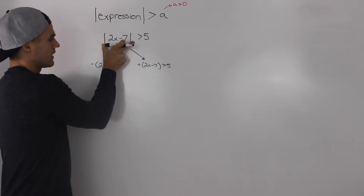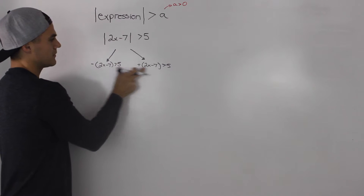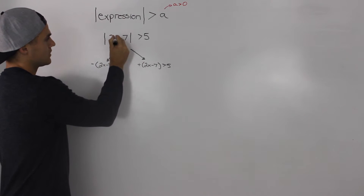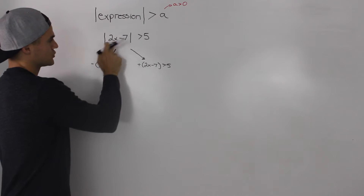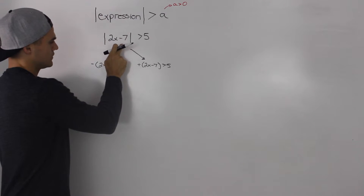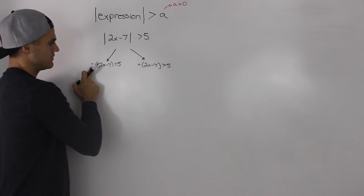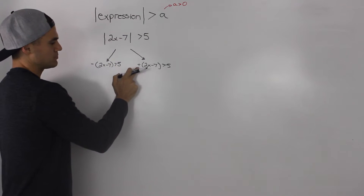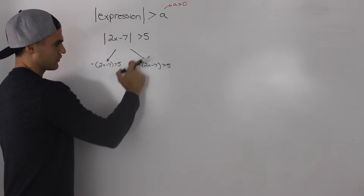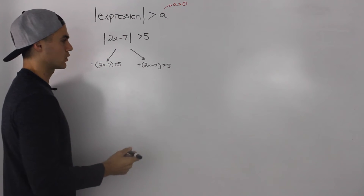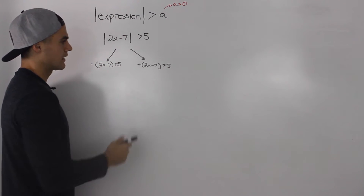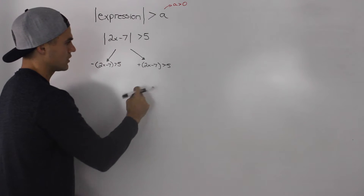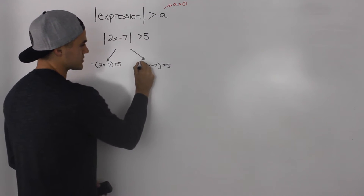You take this inequality and split it up into two cases. Take what's inside the absolute value — the 2x minus 7 — put a negative in front and rewrite the inequality, then put a positive in front and rewrite the inequality. Then you just solve it like a regular inequality since the absolute value is gone.